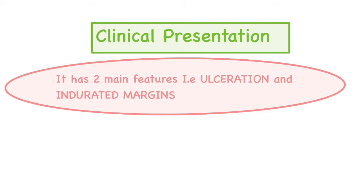Moving on to the clinical presentation, oral squamous cell carcinoma has two main features: ulceration and indurated margins. SCC usually presents in the oral cavity in three types depending upon its morphology: ulcerative growth, proliferative growth, and ulcerative-proliferative growth — also called exophytic or cauliflower-like growth, where growth is mainly outwards. The characteristic pattern is induration, meaning adjacent tissue becomes very hardened, and the edges and margins are also indurated.